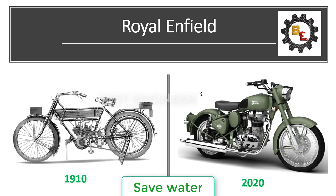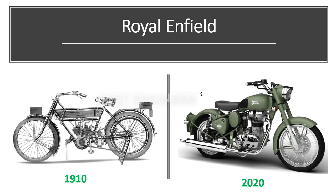They continually improved their design and development, and finally the product has been developed like this to achieve the customer requirement. These are the continuous improvements in manufacturing — from conventional to advanced technology. The latest technology, additive manufacturing, has been developed like this. In upcoming videos, we are going to see all kinds of additive manufacturing technologies as per the ASTM standard.